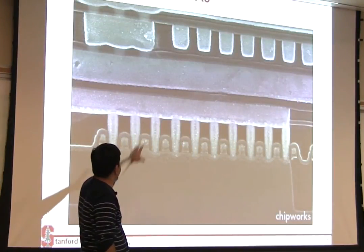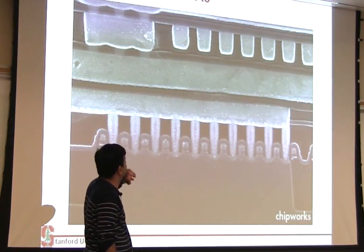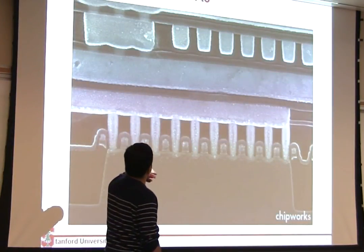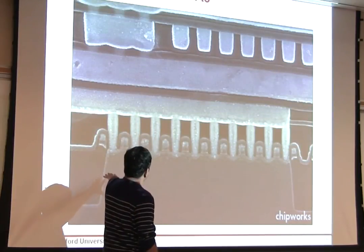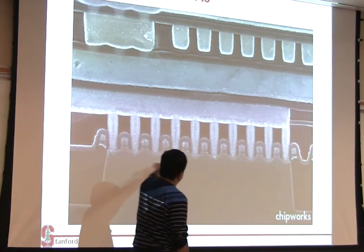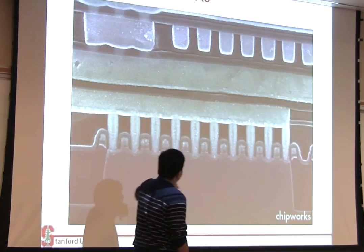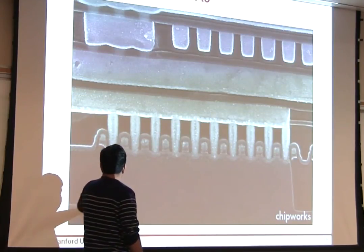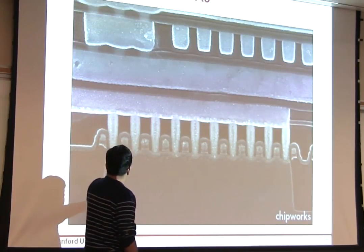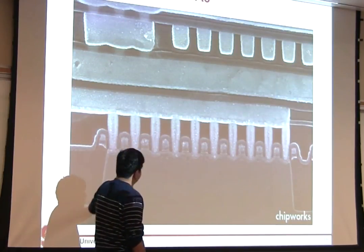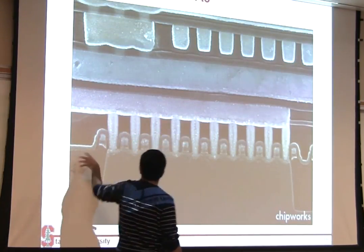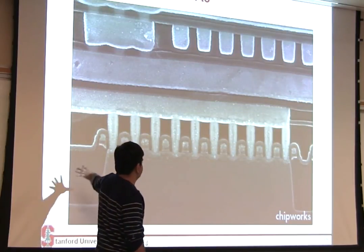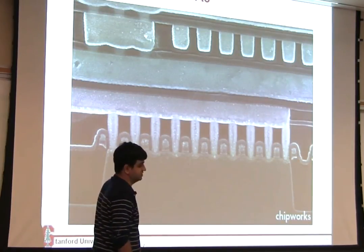So let's take a look. This is that same A6 microprocessor which came out a few weeks ago. So you can see these are all your P-type or maybe N-type transistors, and you have this STI that you formed, which is separating them from an N-type region, which is somewhere not on this picture.